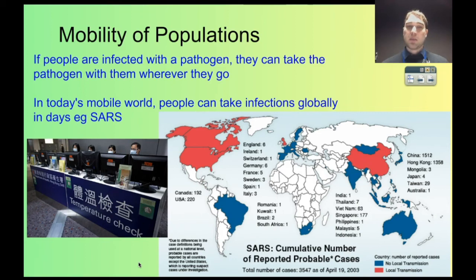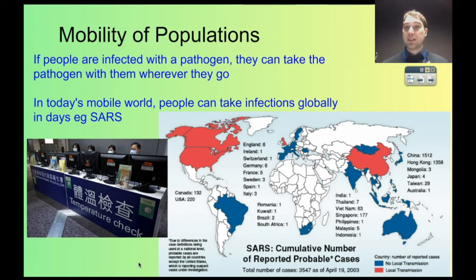The last factor is mobility of populations. People are much more mobile now than they used to be — in the past people might grow up in one place and not move very far over their entire life. These days lots of people are moving into cities, where there are more people and therefore more chance for transmission of disease. People also move internationally very frequently, meaning a pathogen in one location can quickly be transmitted all around the earth within a day.